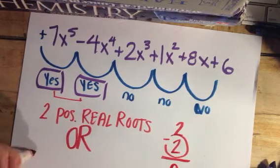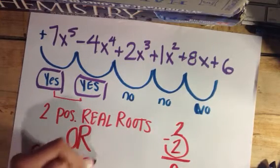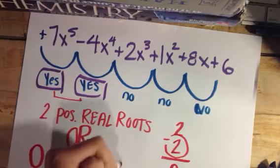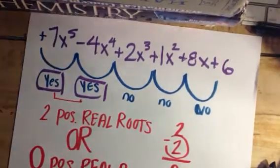So we could either have 2 positive or we could have 0 positive real roots. And that's it. That's all you really need to know.